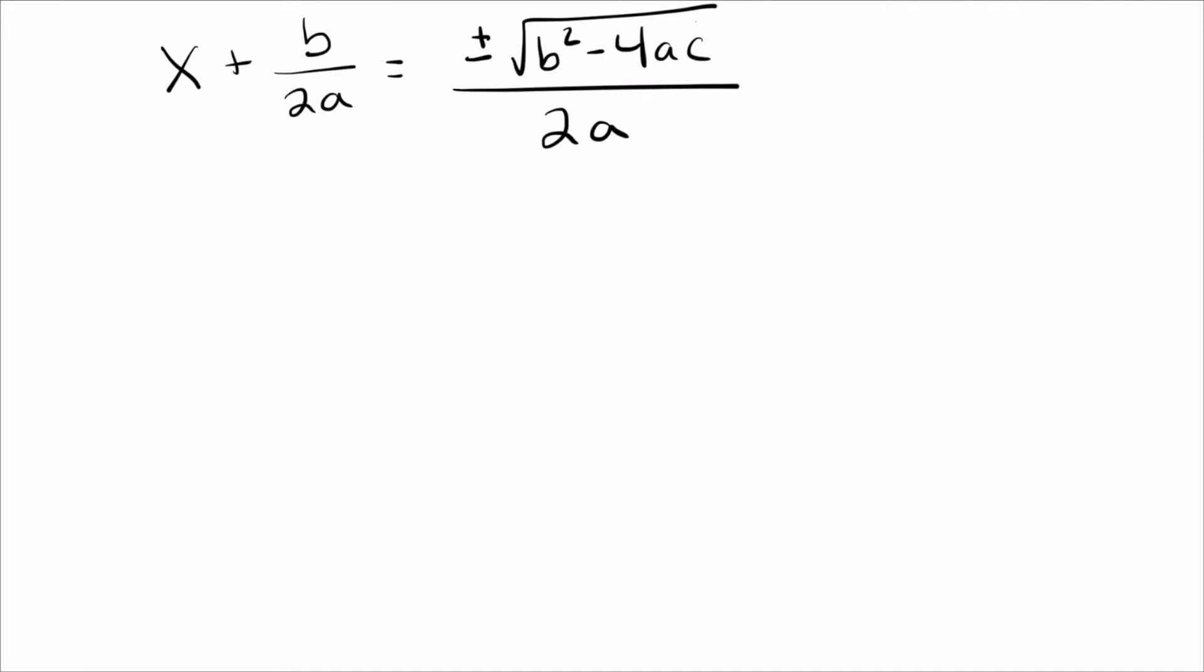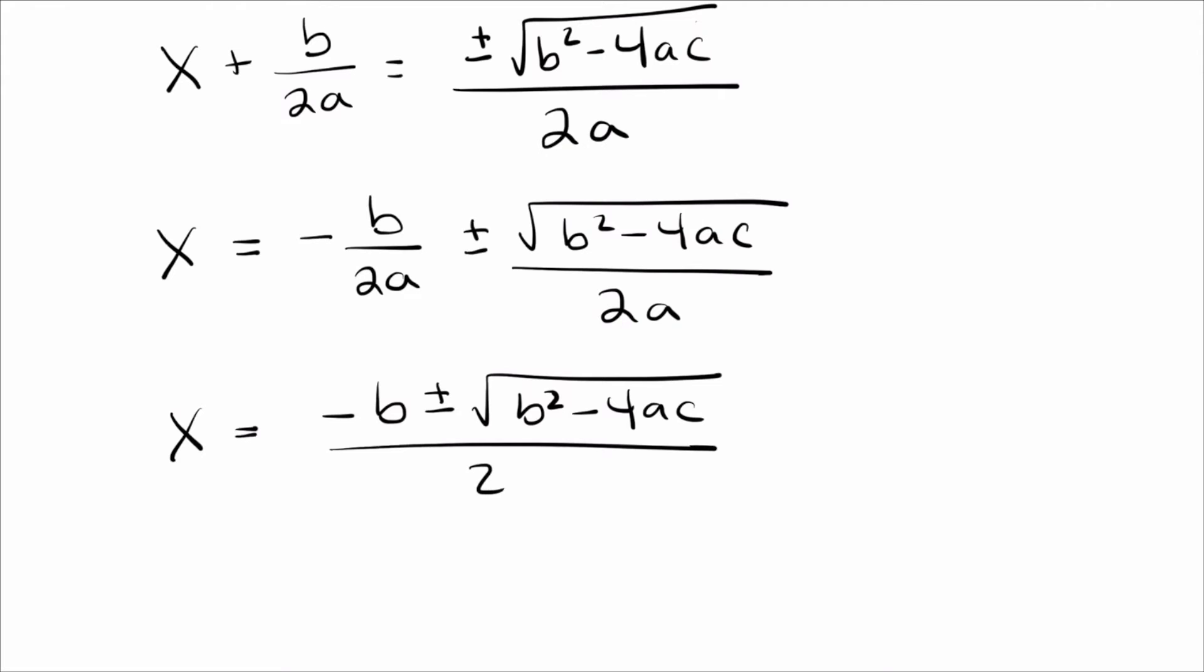So the last step is to go ahead and subtract this b/(2a) to the other side. And what we see is, we've actually already got common denominators. So we'll go ahead and just put the tops together. And if we do that, we get exactly the quadratic equation: x = (-b ± √(b² - 4ac))/(2a).